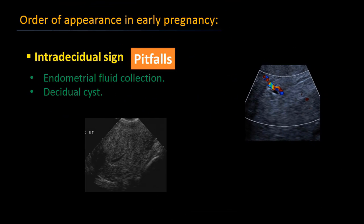There are some mimics which may be confusing. Such mimickers include intracavitary fluid and decidual cyst, which is usually located at the endometrium-myometrium junction. However, the intradecidual sac sign is close to the central white line and may have a little color flash beside it.